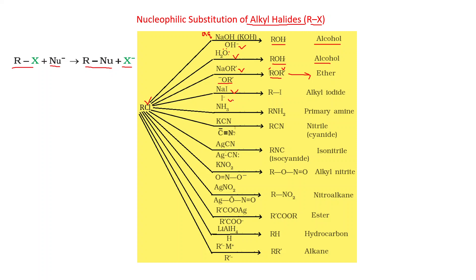With NaI, the iodide ion is the nucleophile; Cl is replaced by I to give alkyl iodide (this is the Finkelstein reaction). With NH₃, nitrogen acts as nucleophile to give RNH₂ (primary amine), with HCl eliminated. With KCN, carbon attacks to give RCN (nitrile/alkyl cyanide). With AgCN, nitrogen acts as nucleophile to give RNC (isocyanide/isonitrile).